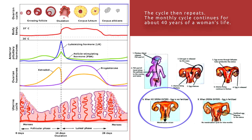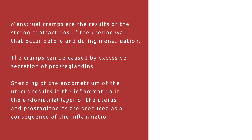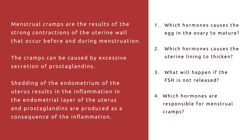Then the cycle repeats, continuing for about 40 years of a woman's life. Menstrual cramps are the result of strong contractions of the uterine wall that occur before and during menstruation. The cramps can be caused by excessive secretion of prostaglandins. Shedding of the endometrium results in inflammation in the endometrial layer, and prostaglandins are produced as a consequence of that inflammation.